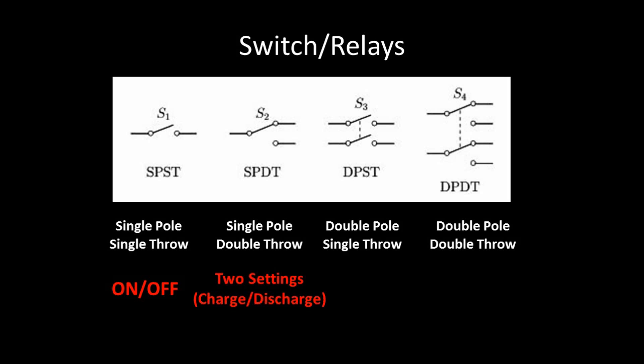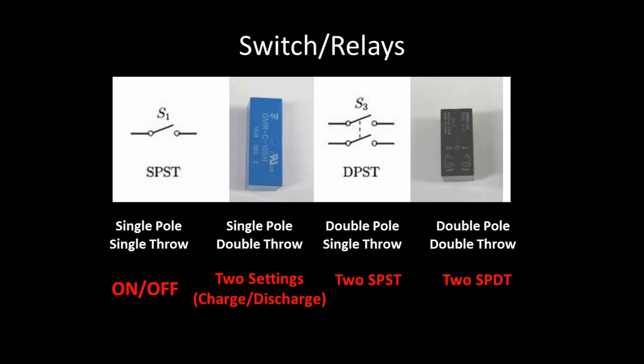Then there's the double pole single throw and double pole double throw switches, which are essentially two single pole single throw switches in one, or two single pole double throw switches in one switch. We chose to use single pole double throw switches or double pole double throw switches, because we wanted to be able to alternate between charging our capacitors from our microbial fuel cells and discharging our capacitors to our external resistance.